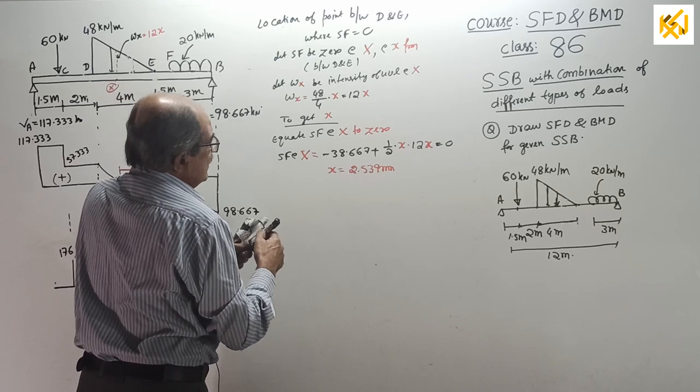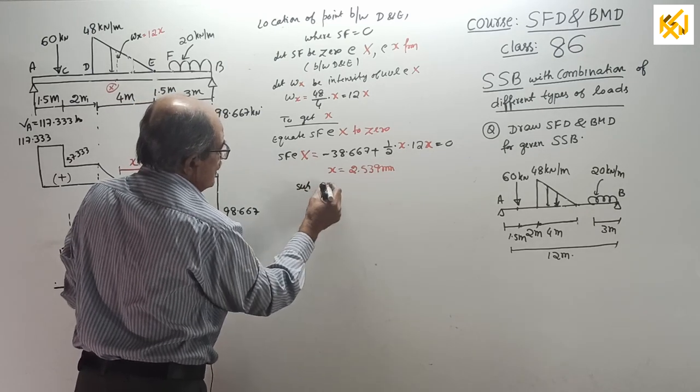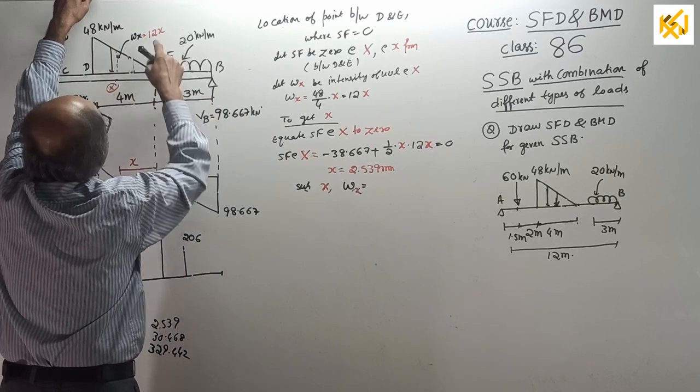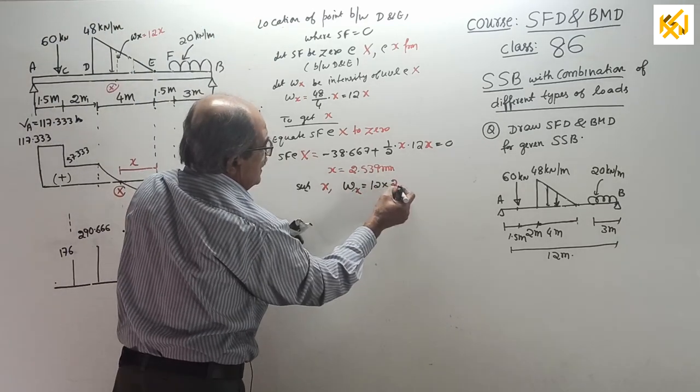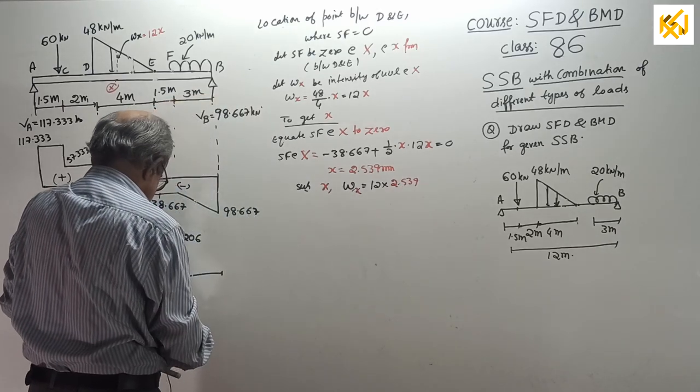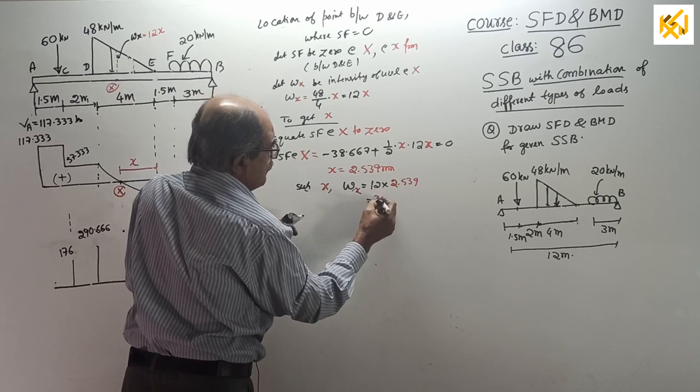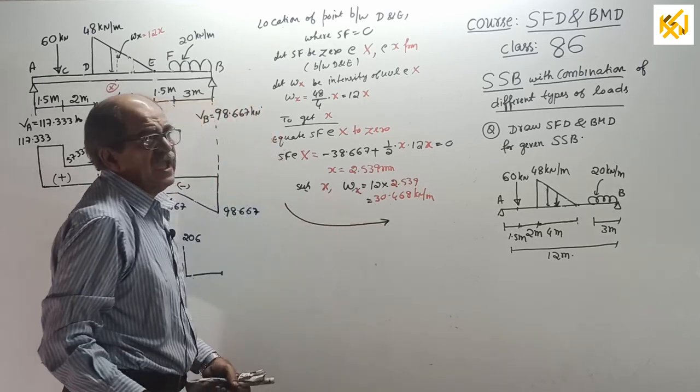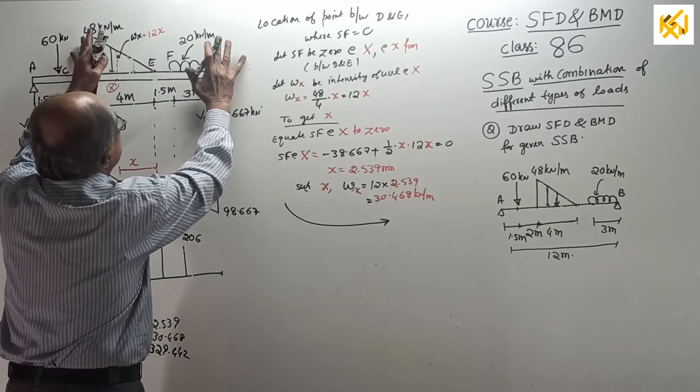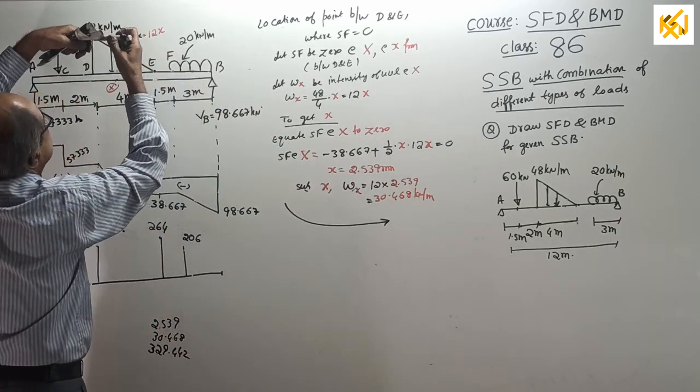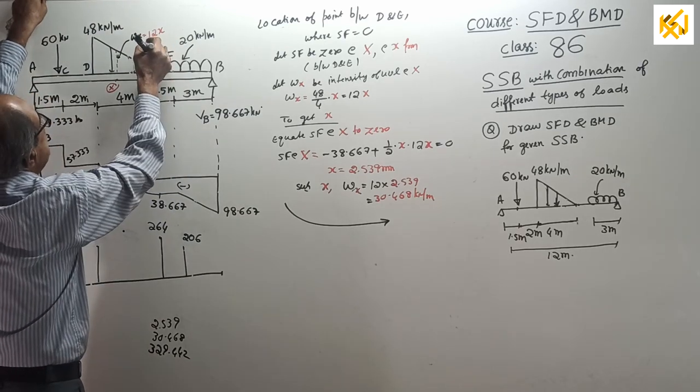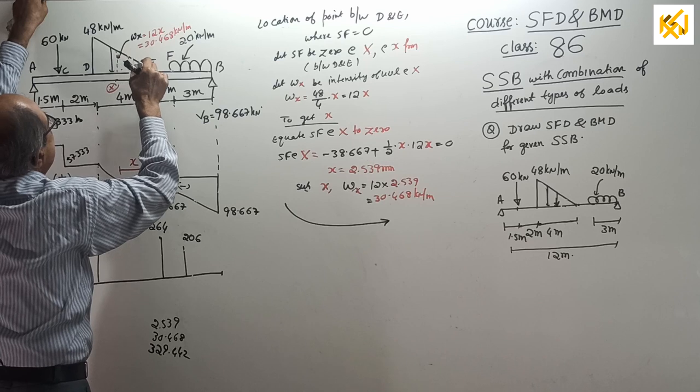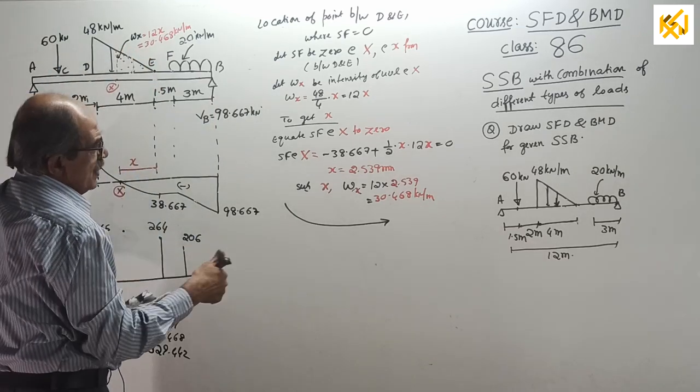Those who find confusion, you write minus 98.667 plus 20 into 3, then write plus half into X into 12X. Solving, you get the value of X. To save time: 2.539 meter. Immediately, substituting that value of X, we get intensity W at X equal to 12 into 2.539, which comes 30.468 kilonewton per meter. Go back and enter everything. This is the triangle which comes to right of X. Important. Over.